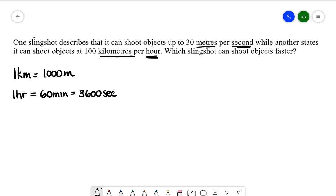You could also start with 100 kilometers per hour and convert it back into 30 meters per second. It really doesn't matter which one you choose. So let's start with slingshot one's speed. Here what we have is 30 meters per one second.